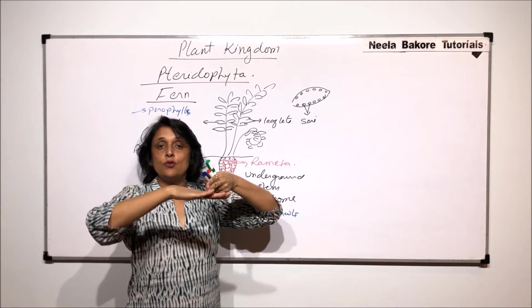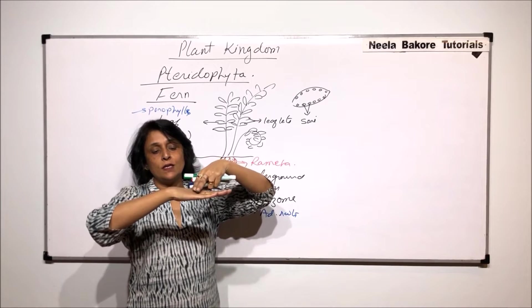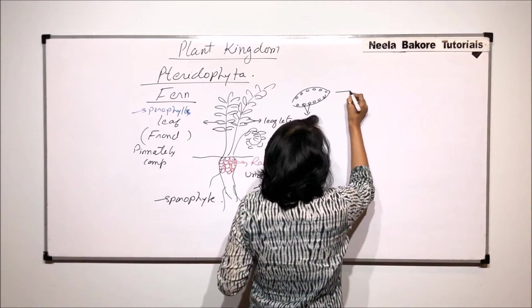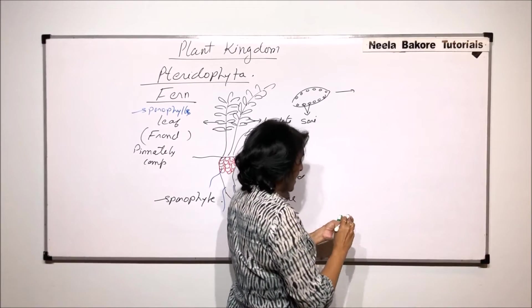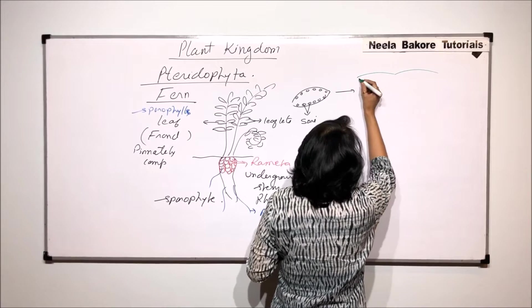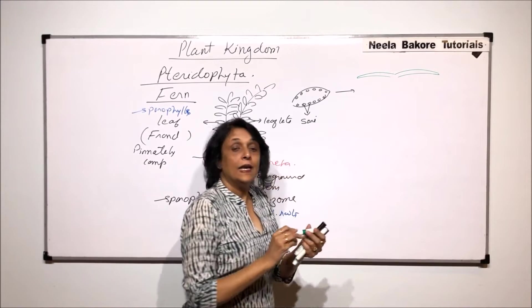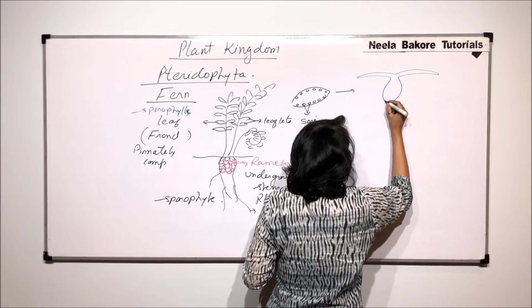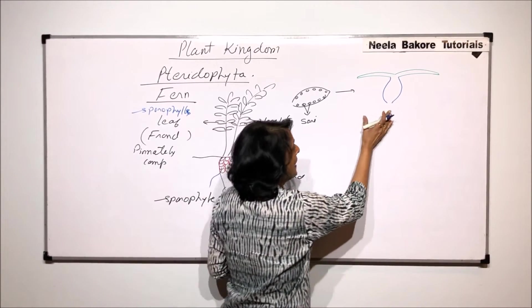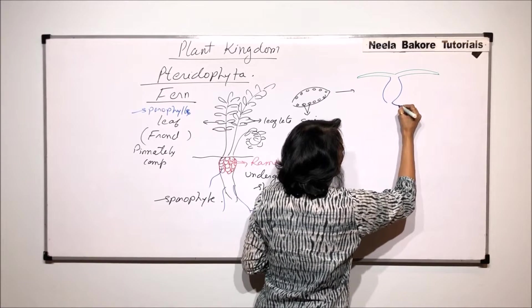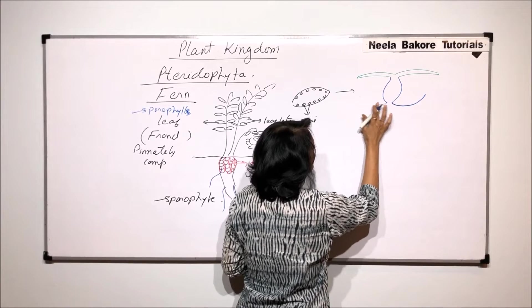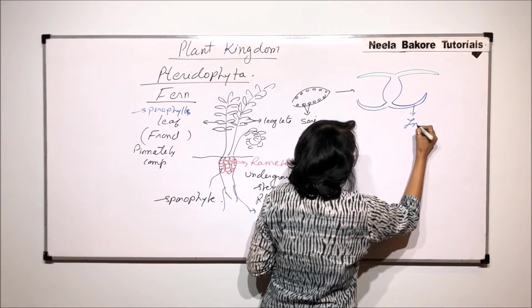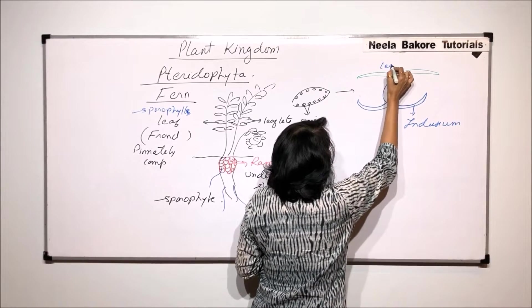If we cut the leaf to see its section, we find the epidermis and the sorus on the lower side. Enlarging a sorus, we see the upper epidermis on the dorsal side, and in the middle there is a swollen structure — a swollen receptacle to which the sporangia are attached. On the lower side there is an umbrella-like protective structure called the indusium.